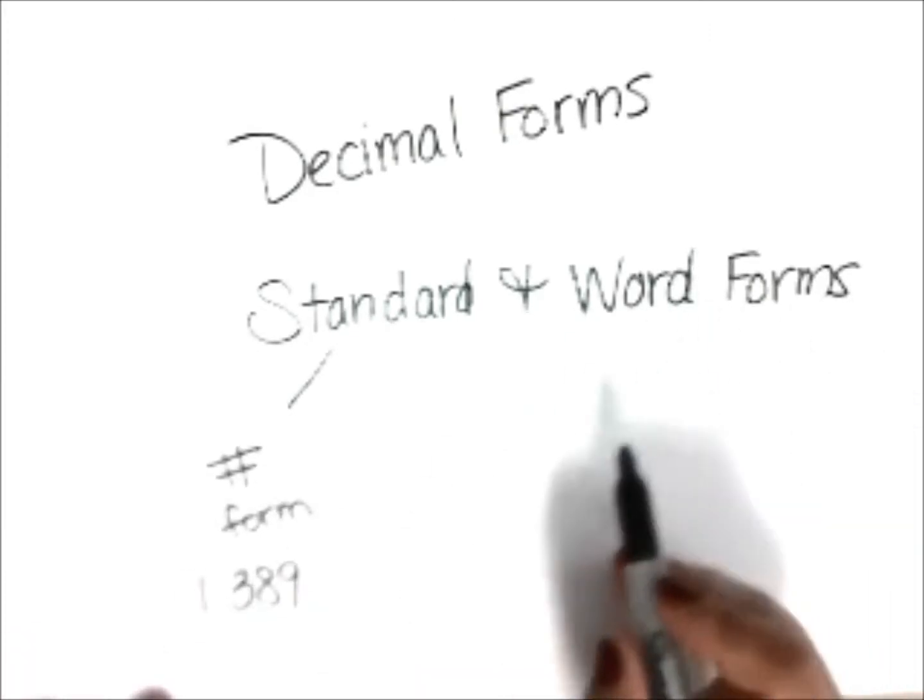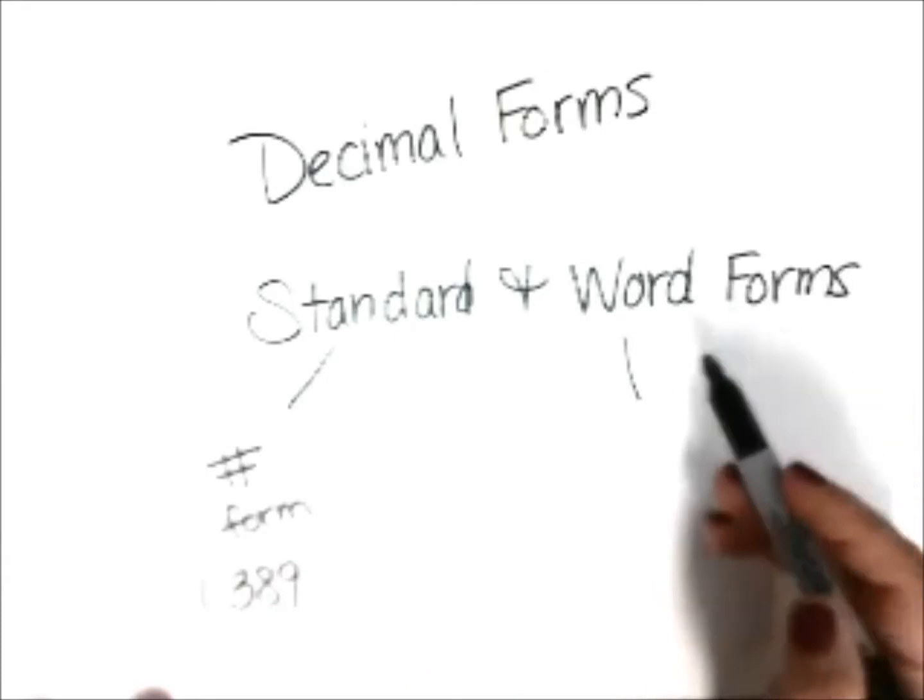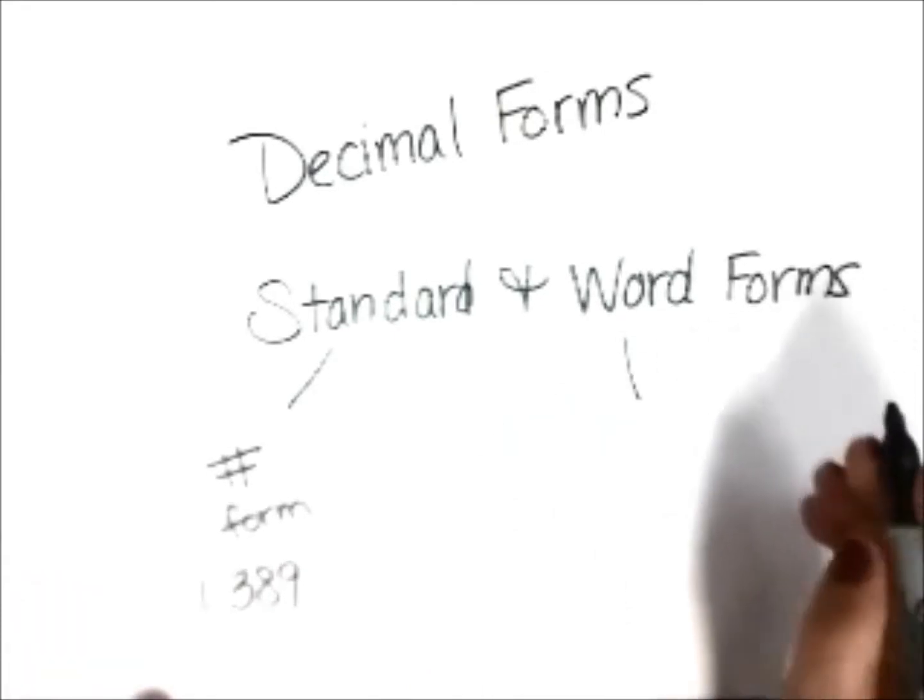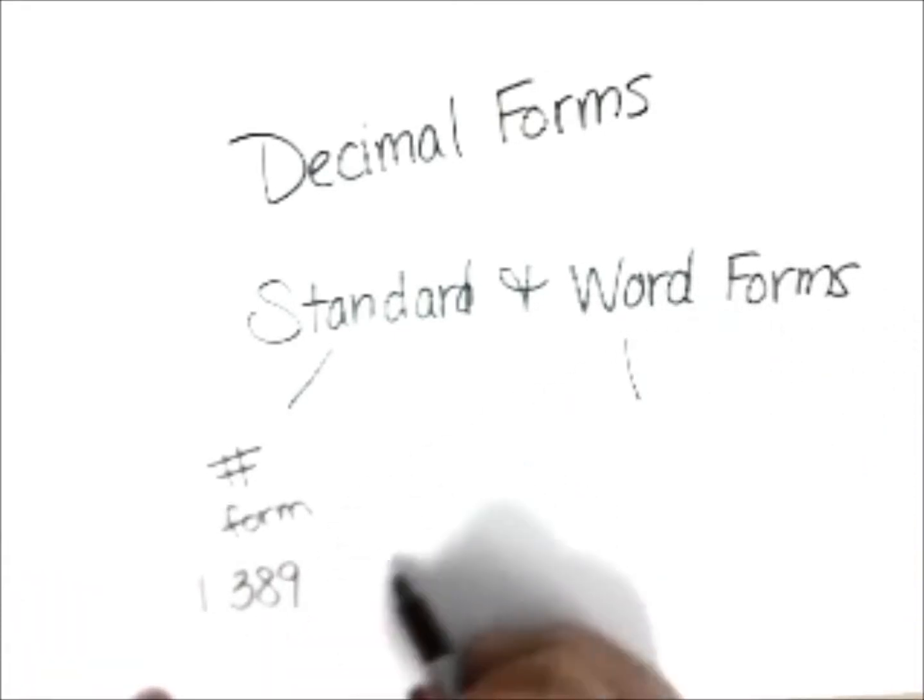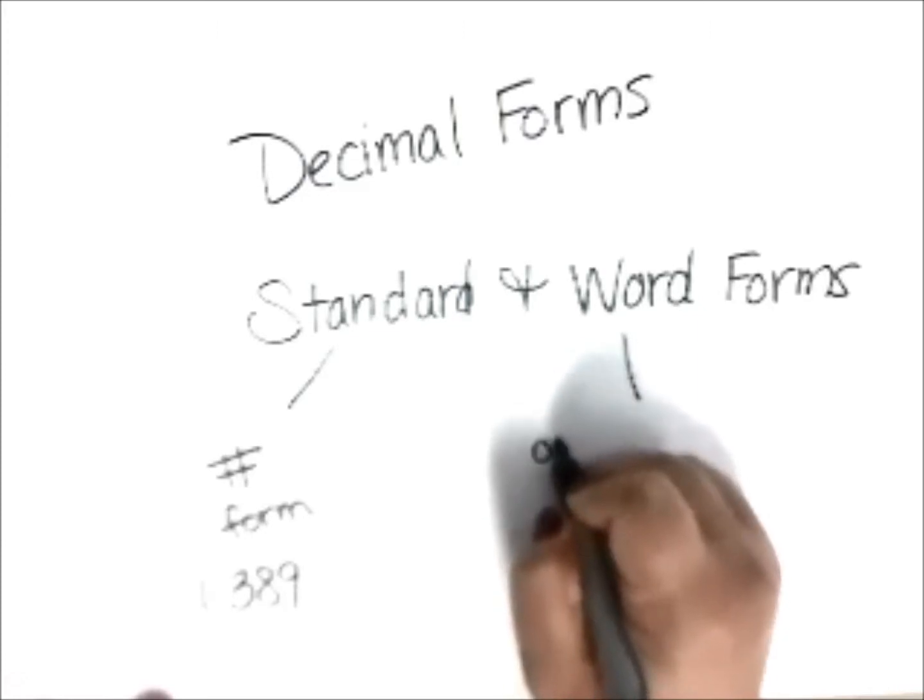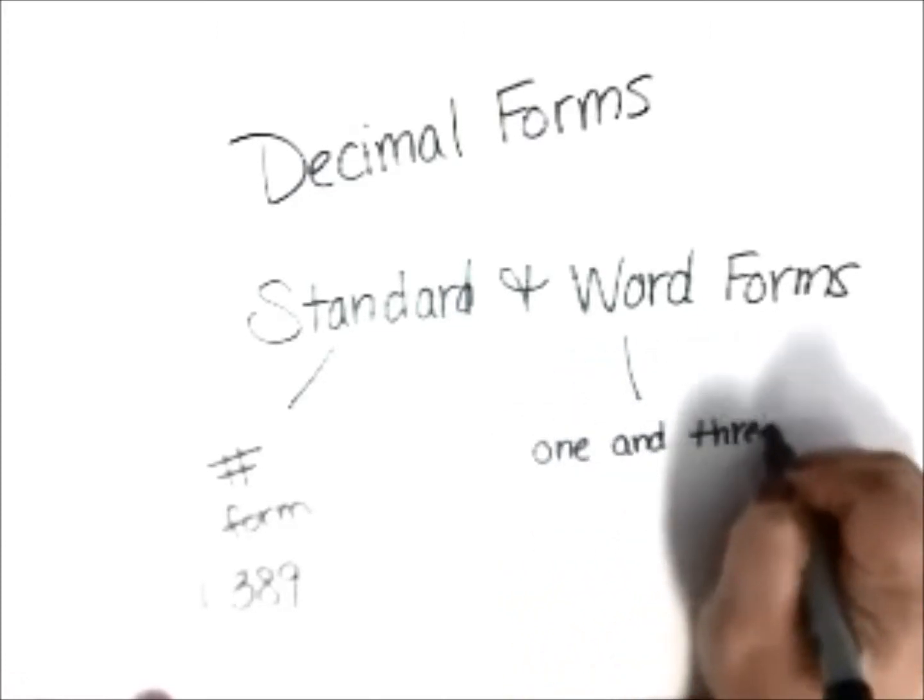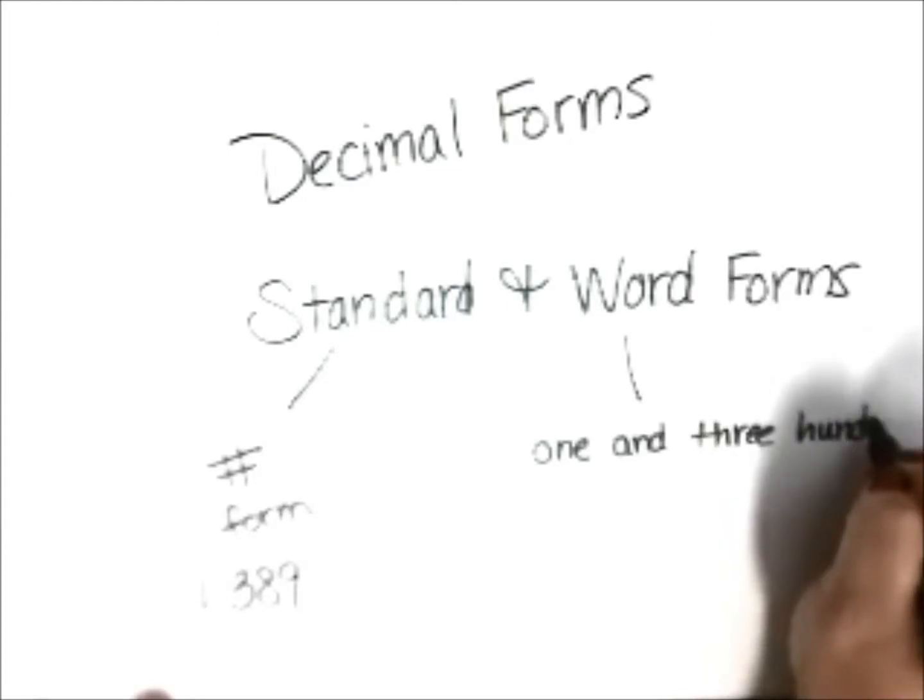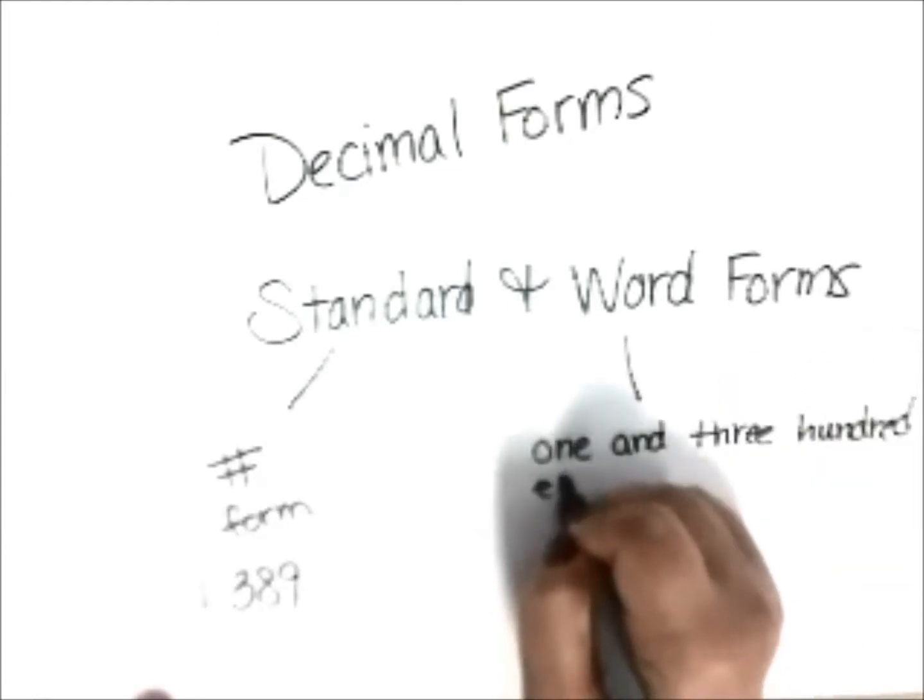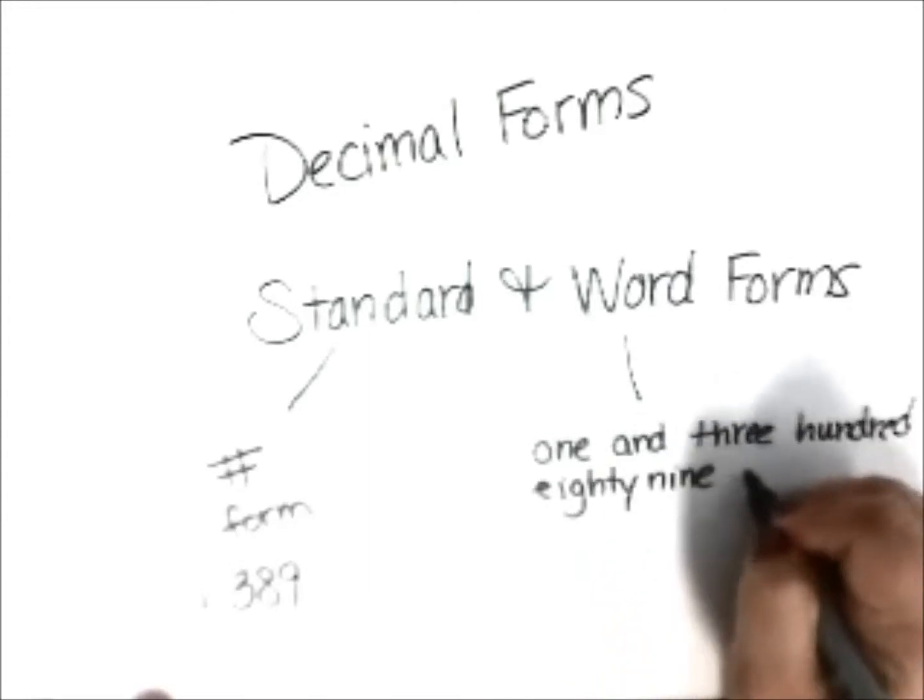Word forms are when we take the standard form and we write it in words. Pretty tricky there. So in the same instance, because I can say my decimal, I can write it. I would say 1 and 389 hundredths.